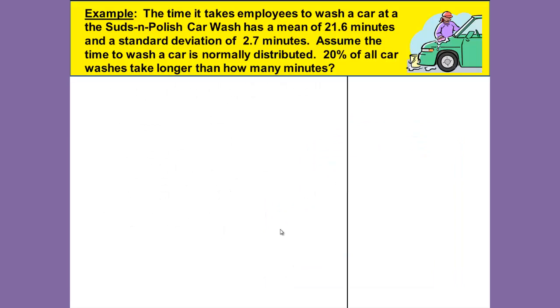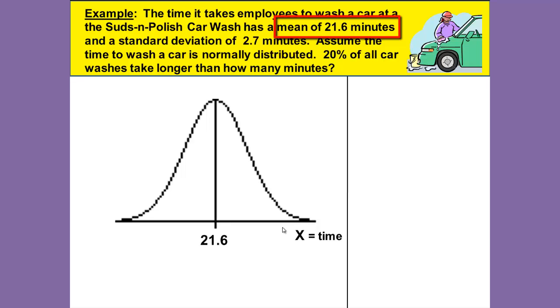Let's work through this example. The first thing we want to do is to draw our standard or normal curve. In the curve, in this case we have a mean, and let's mark our x value. The x's are our time and our mean time is 21.6. Let's mark this as our mean and we have a standard deviation of 2.7 minutes.